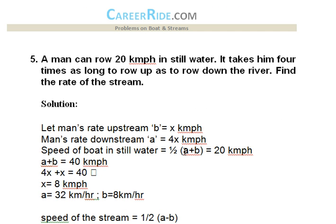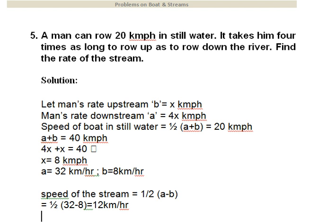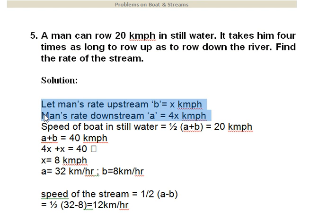Last question: a man can row 20 kilometers per hour in still water. It takes him four times as long to row up as to row down the river. Find the rate of the stream. Let the man's rate upstream be x. Since it takes four times as long to row up as down, the man's rate downstream is 4x. The speed in still water is 1/2 × (a + b) = 20 km/h, so a + b = 40.